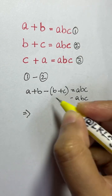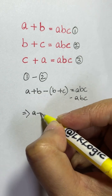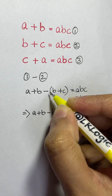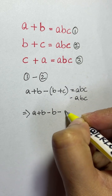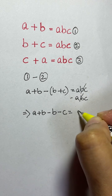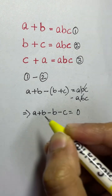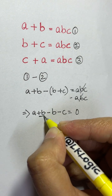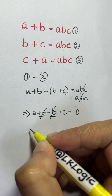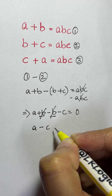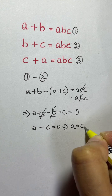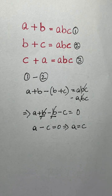So we get a plus b minus b minus c equals abc minus abc, which equals zero. Here, plus b and minus b cancel out, so we are left with a minus c equals zero. This tells us that a is equal to c.